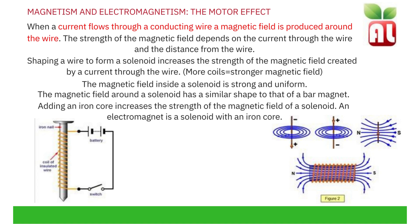The magnetic field inside a solenoid is strong and uniform. The magnetic field around a solenoid has a similar shape to that of a bar magnet. Adding an iron core increases the strength of the magnetic field of a solenoid. An electromagnet is a solenoid with an iron core. Using your right hand shaped into a thumbs up or thumbs down, your thumb indicates the direction of the current flow through the wire, and the direction your fingers are curling into the palm of your hand is the direction of the magnetic field.